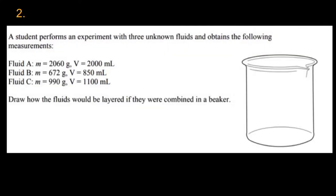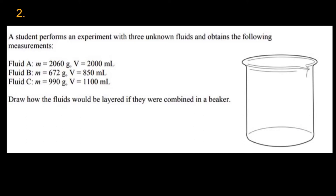Moving on to question 2. A student performs an experiment with three unknown fluids and obtains the following measurements. There is fluid A, fluid B, and fluid C, each with a mass and a volume. We need to draw how the fluids would be layered if combined in a beaker. The fluid with the highest density will be at the bottom, followed by the less dense, and the least dense at the top. So we need to find the density of each fluid.